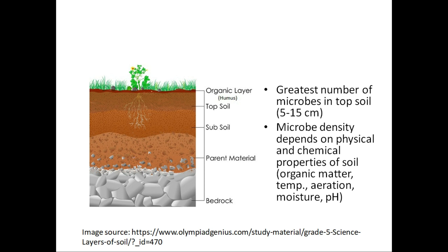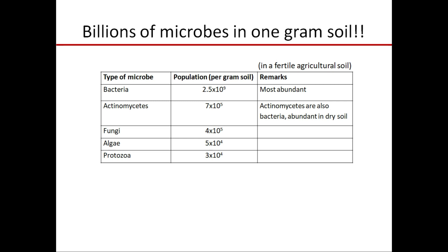These microbes in the soil help in various ways — they help plants to grow, help plants get enough nutrients, and help in nutrient recycling in nature. These microbes are present in billions. In one gram of soil we have billions of microbes. In a fertile agricultural land, an estimate says that bacteria are present in the number of 2.5 billion per gram of soil. Fertile soils or agricultural soils have more microbes than non-fertile soil, so agriculturally active soil has more microbes.